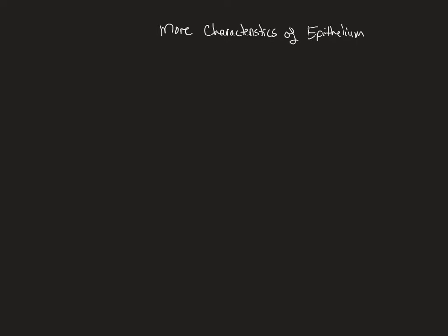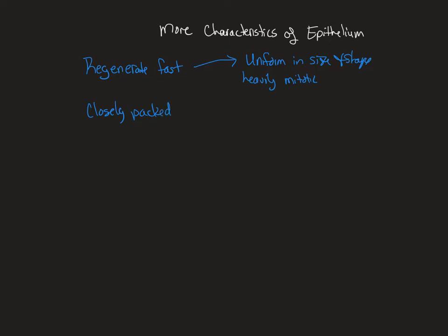More characteristics of epithelial cells: they regenerate fast. They can reproduce — do mitosis quickly and replace themselves. They are heavily mitotic and roughly uniform in size and shape. They are also closely packed together so that one epithelial cell is always touching another. When they stop doing that and start floating around in the body, we now call it a cancer. So they need to be closely packed together.